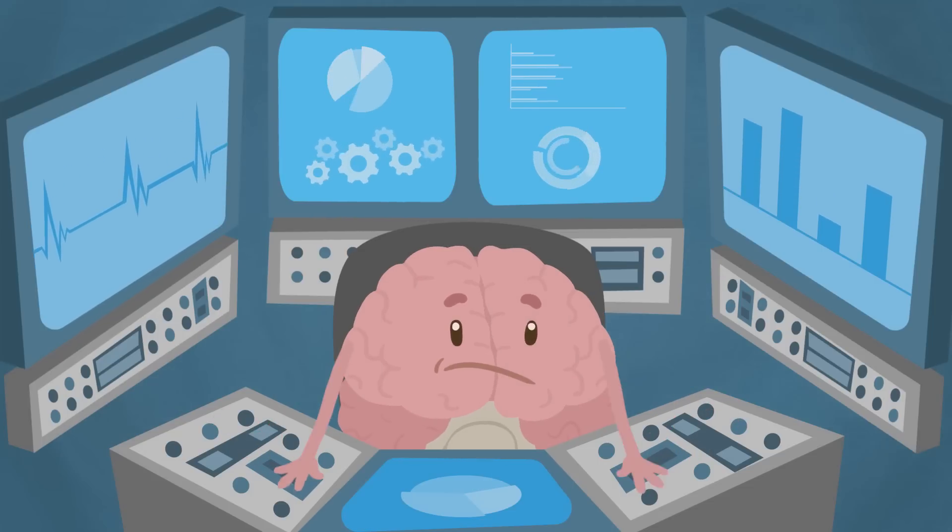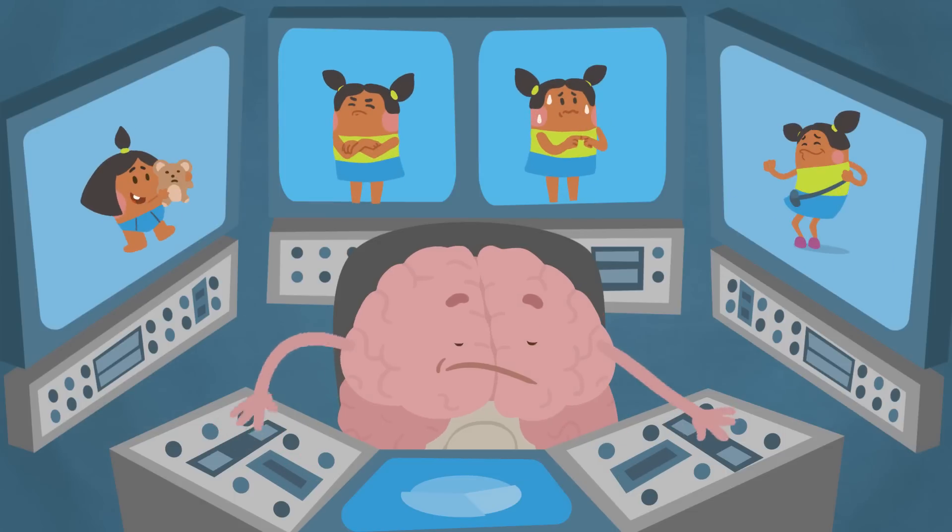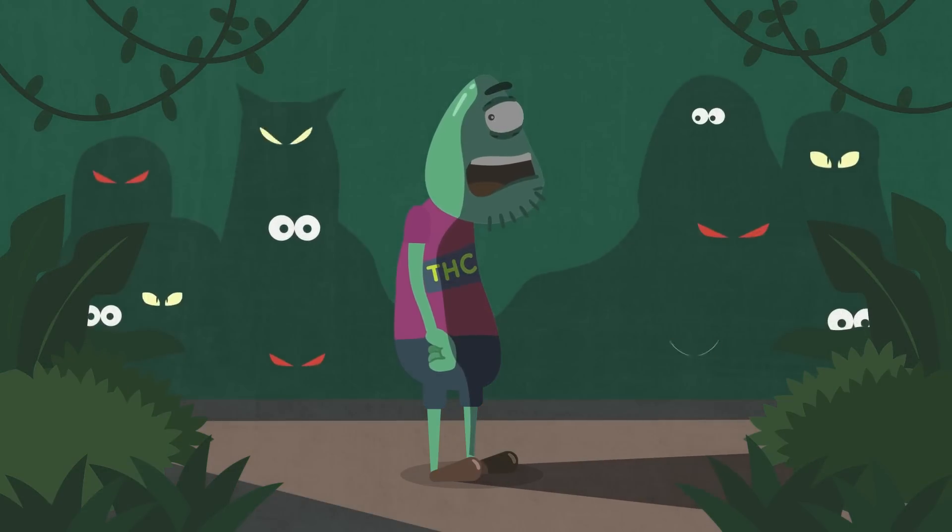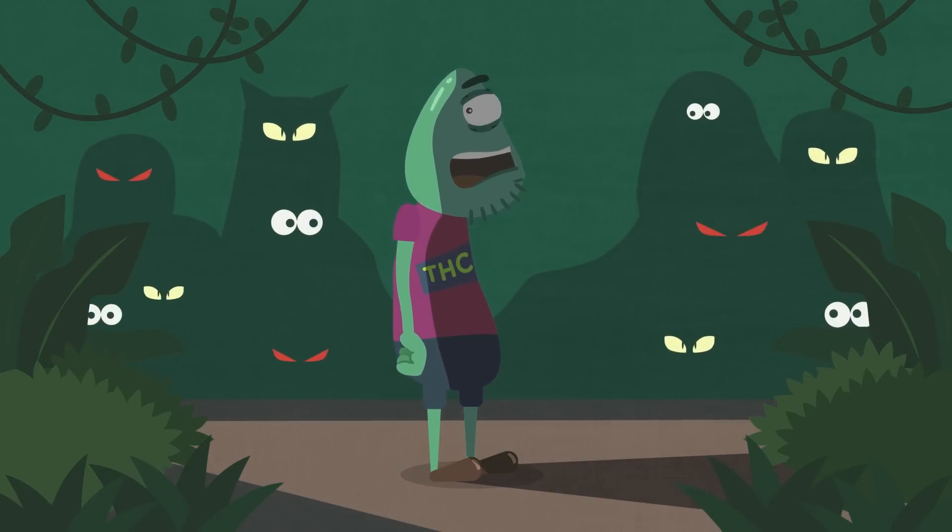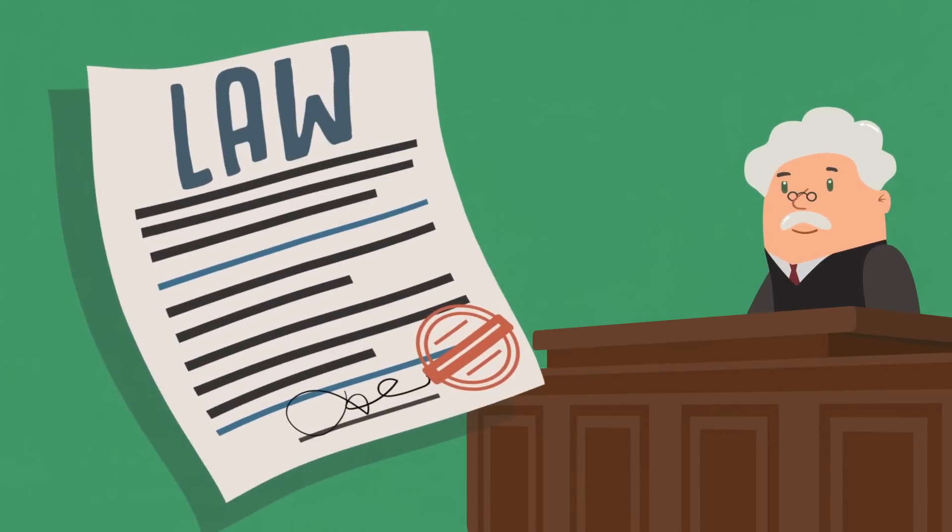This means your brain will have a harder time regulating all of those functions like memory, coping with stress and anxiety, and motor coordination. Plus, when using marijuana, some people may experience fear, anxiety, paranoia, or memory loss.